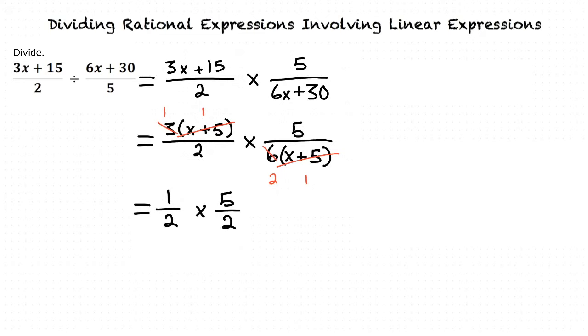Why does 6 become 2 when we cancel the 3? The 6 becomes 2 because 6 divided by 3 equals 2.